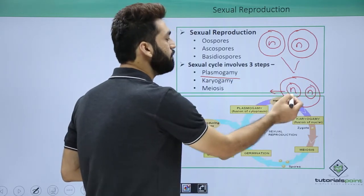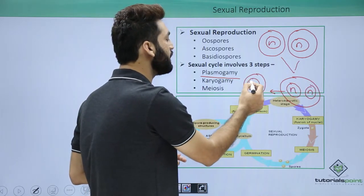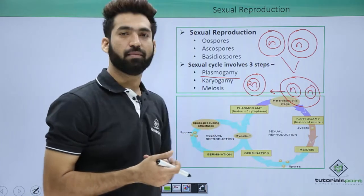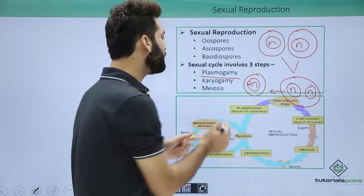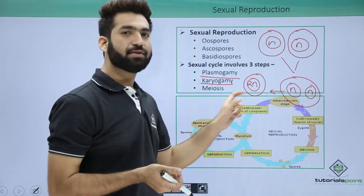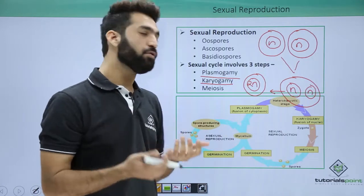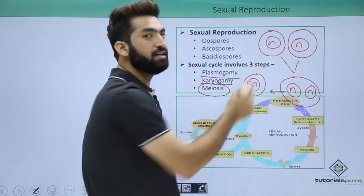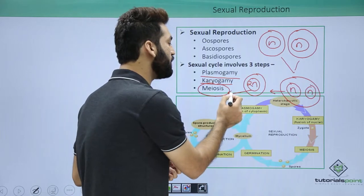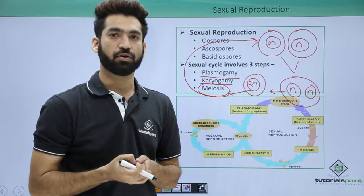After plasmogamy, the nuclei will also fuse. When both nuclei fuse, they produce the diploid stage — this is called karyogamy, where the nuclei fuse. This diploid zygote then undergoes meiosis because fungi must maintain their haploid character, producing haploid fungi again. This is how sexual reproduction occurs in fungi.